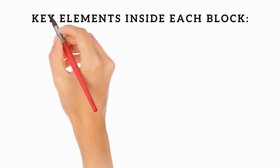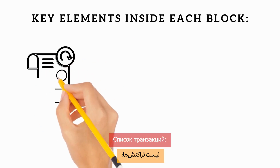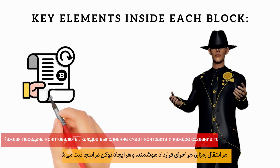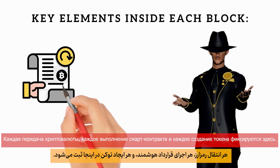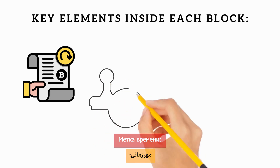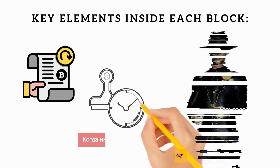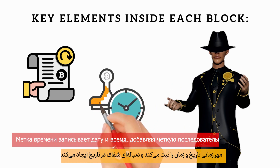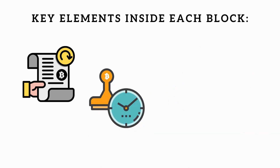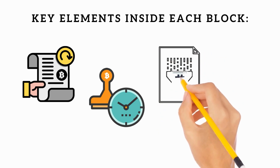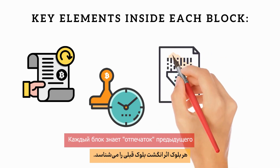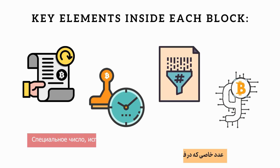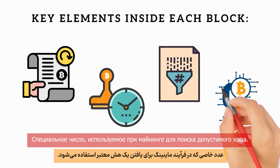Key elements inside each block: First, a list of transactions — every transfer of cryptocurrency, every smart contract action, every token creation — they're all recorded here. Second, a timestamp recording exactly when these transactions happened, adding a clear sequence to the history. Third, the previous block's hash: each block knows the fingerprint of the block before it. Fourth, the nonce: a special number used during mining to find a valid hash. More on this later.